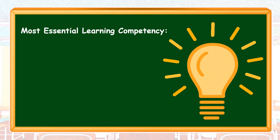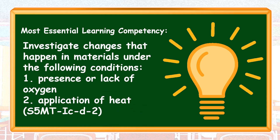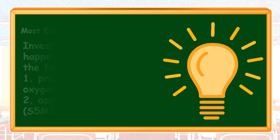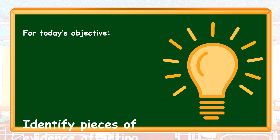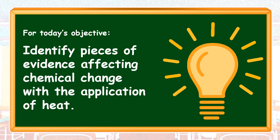For our most essential learning competency, investigate changes that happen in materials under the following conditions: Number one, presence or lack of oxygen; and number two, application of heat. For today's objective, identify pieces of evidence affecting chemical change with the application of heat.